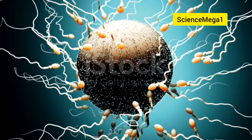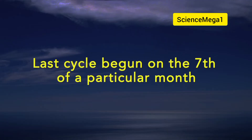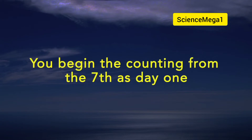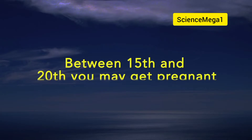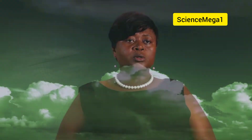So for example, if your last cycle began on the 7th of a particular month, you begin the counting from the 7th as day 1 and continue to the 16th of the same month as day 10. In this case, between the 15th and 20th, you are very likely to get pregnant if you get involved in unprotected sex. You may refer to your notes for further explanation — I said may, because there are other factors that affect pregnancy.